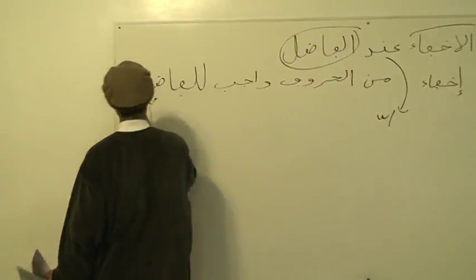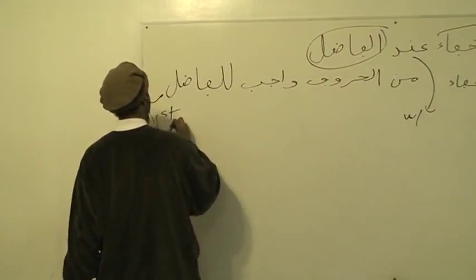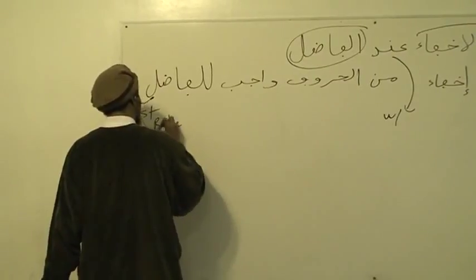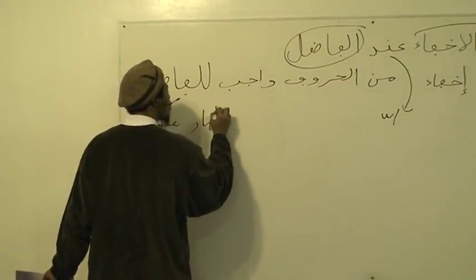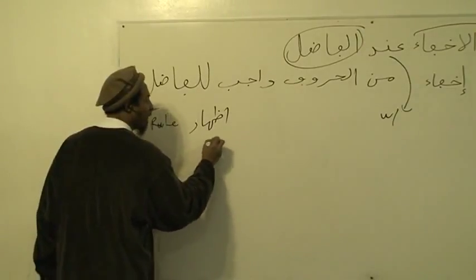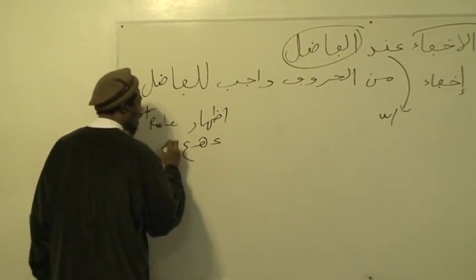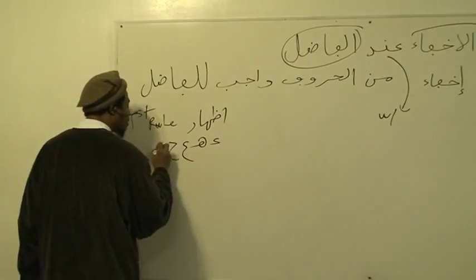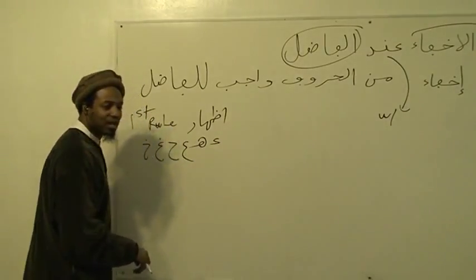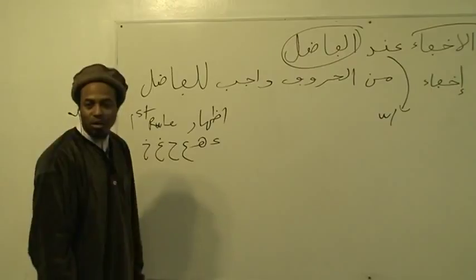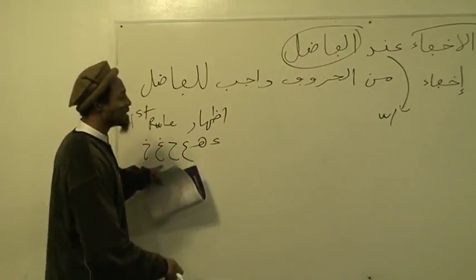What was the first rule? Idhaar, right. So Idhaar is the first rule. What letters is Idhaar? These are six letters — the six letters of the hulk, of the throat. So you got six letters.